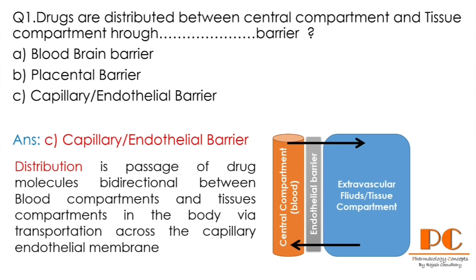The right answer is C, capillary or endothelial barrier. As we can see in the image, the central compartment is basically the blood compartment. Drug molecules pass through the capillary endothelial barrier to reach the tissue compartment. So distribution is the process of bidirectional movement of drug molecules between the blood compartment and tissue compartment via transportation across the capillary endothelial membrane. Right answer is C.